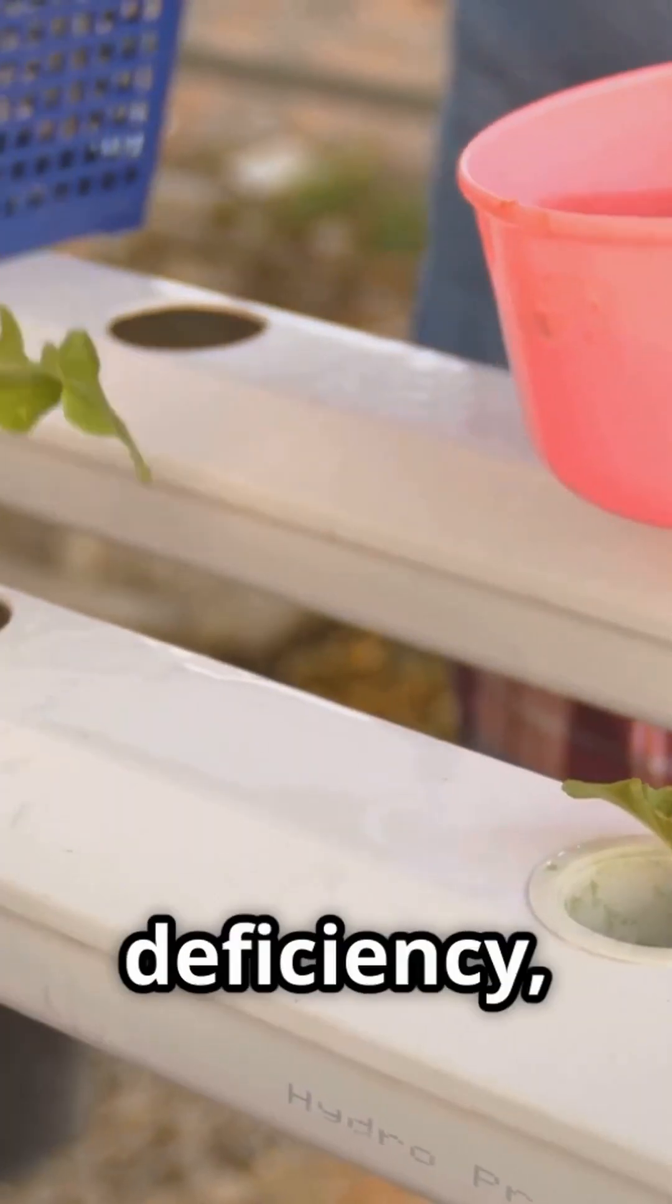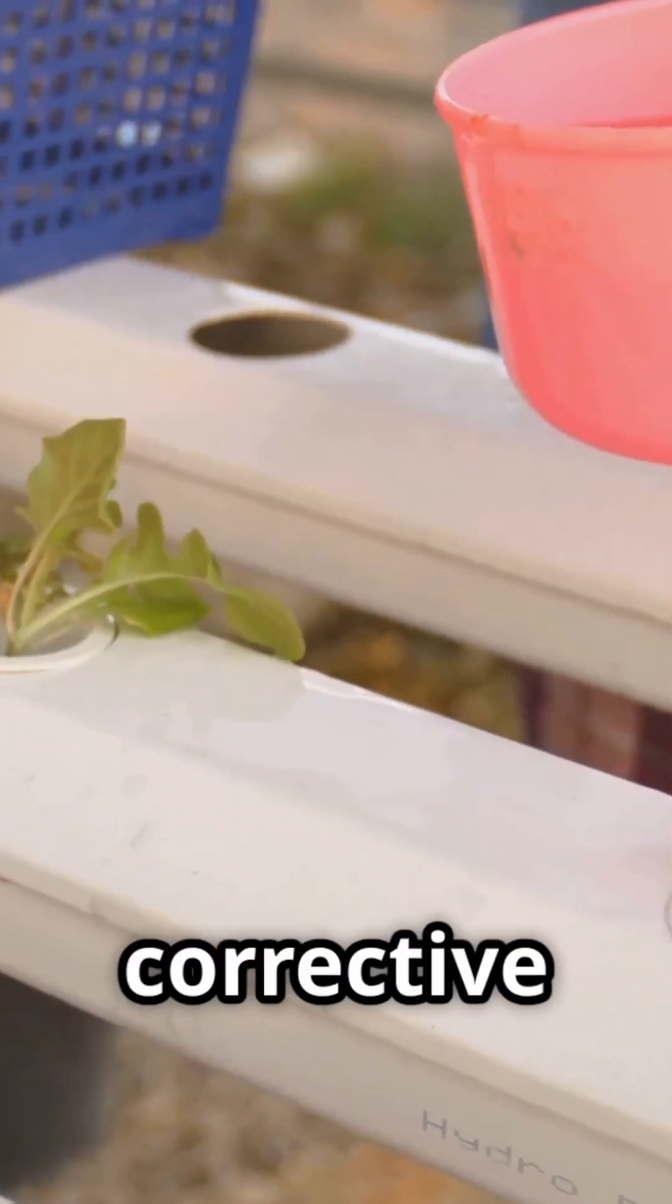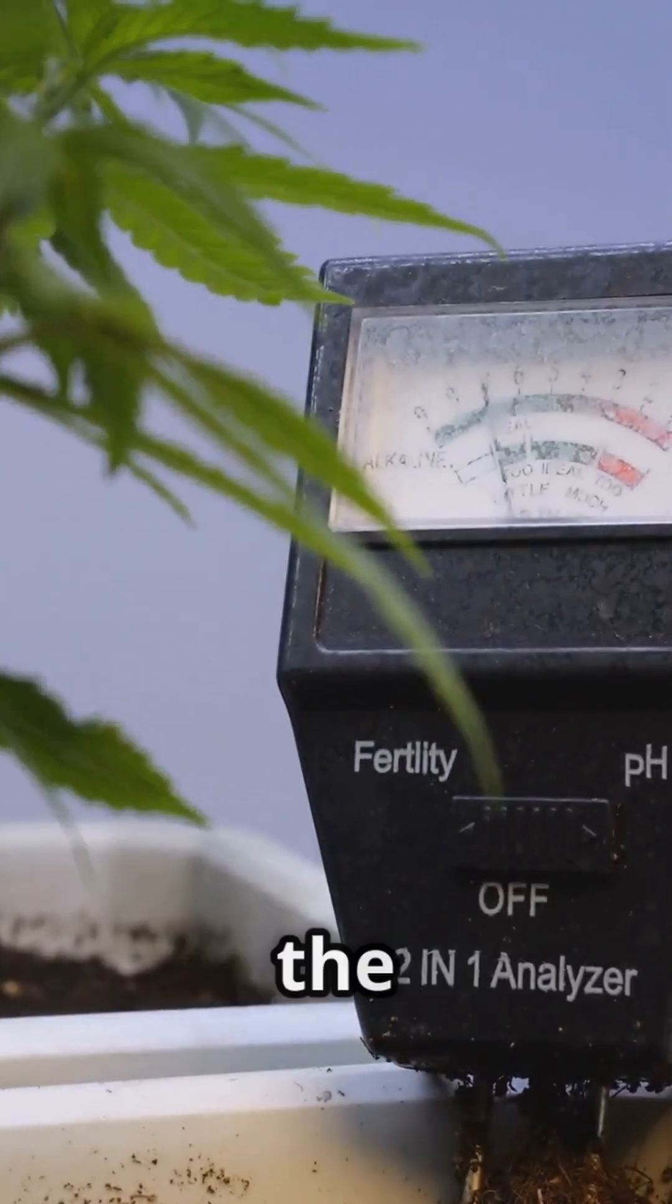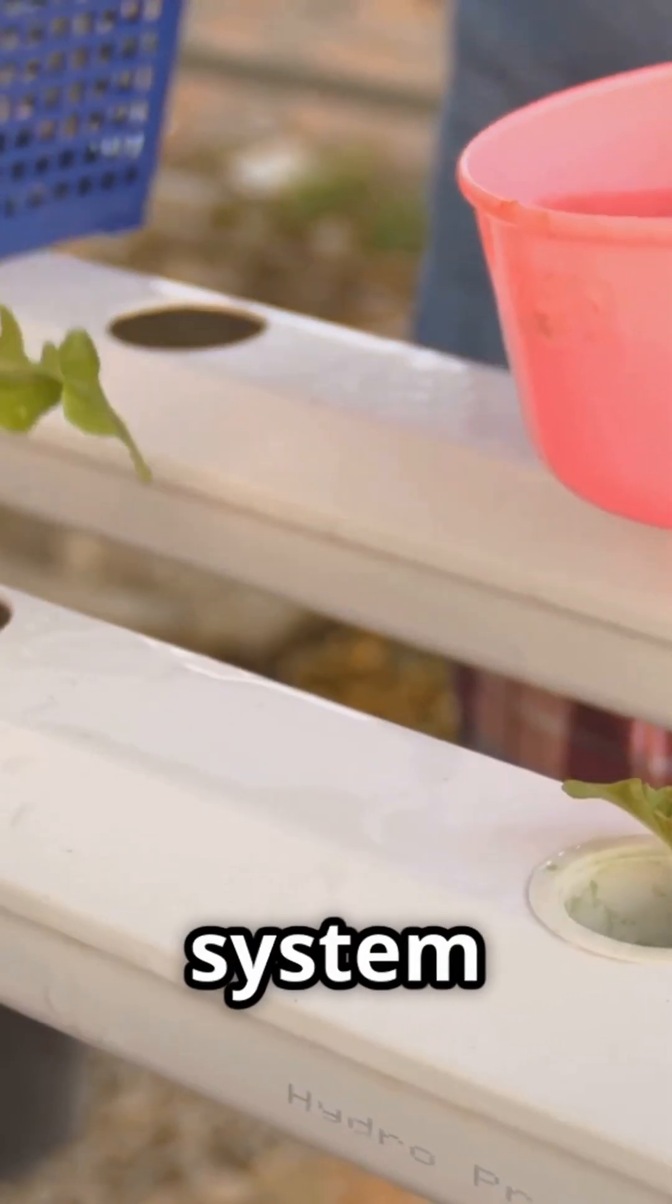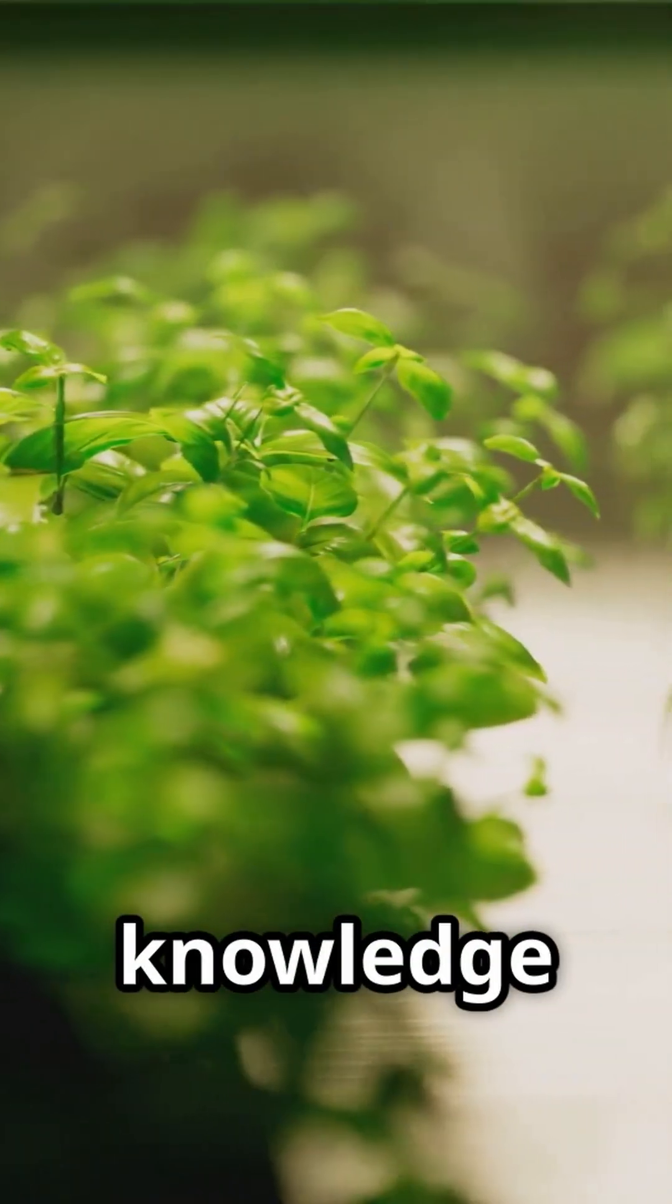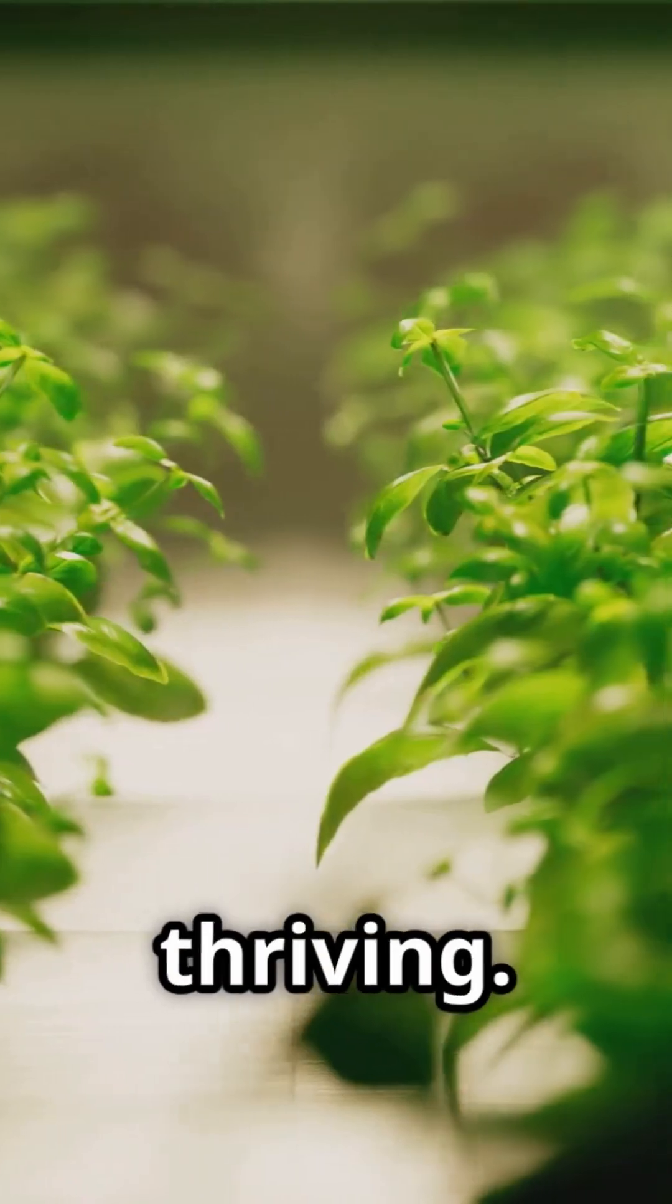Once you've identified the deficiency, it's time to take corrective action. This might involve adjusting the nutrient levels in your solution, changing the pH, or even flushing your system and starting fresh. We'll walk you through each of these steps, ensuring you have the knowledge and confidence to keep your plants thriving.